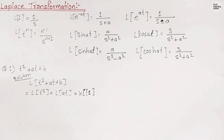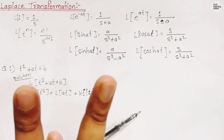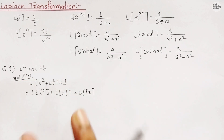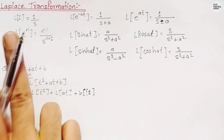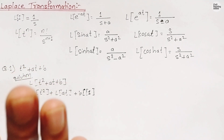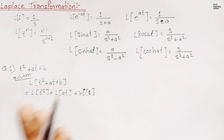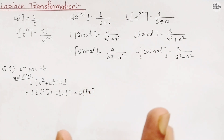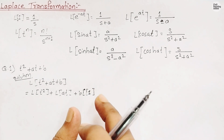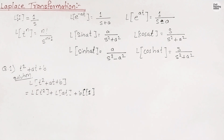In Laplace transformation we work with two variables. We see variable t and on applying the Laplace transformation operation, it gets converted into s. Similarly, while doing inverse Laplace transformation, we see variable s and it gets converted back into t.